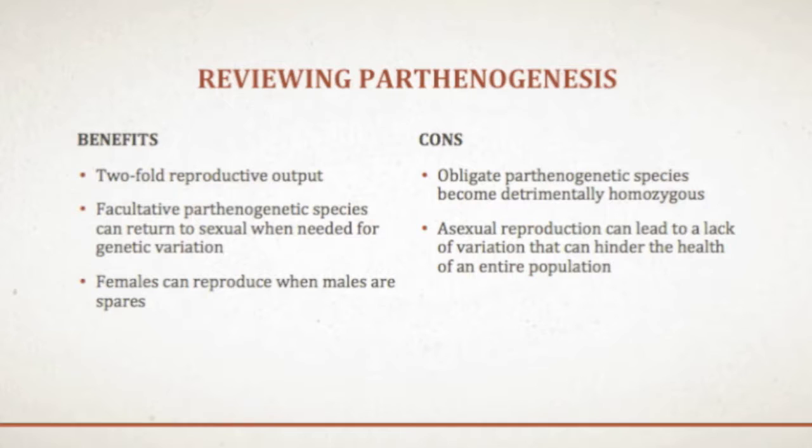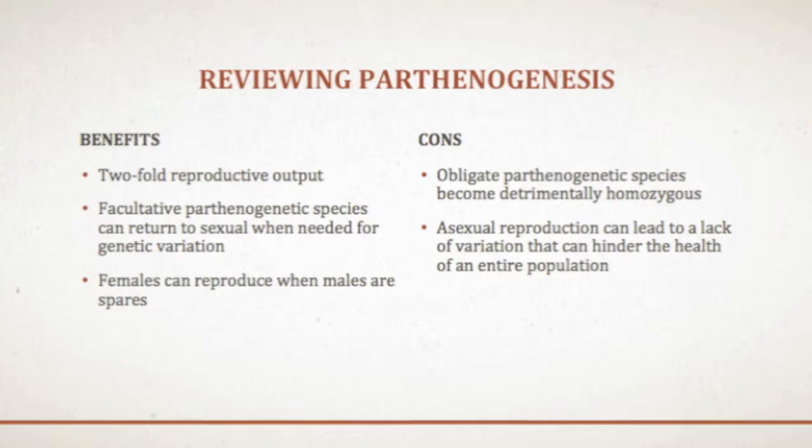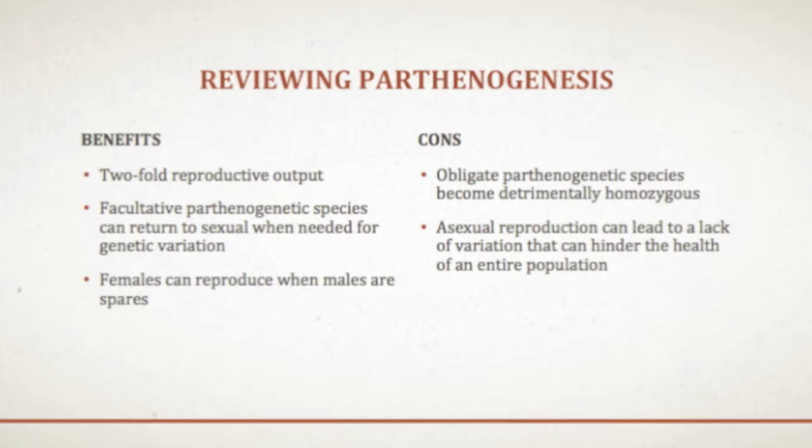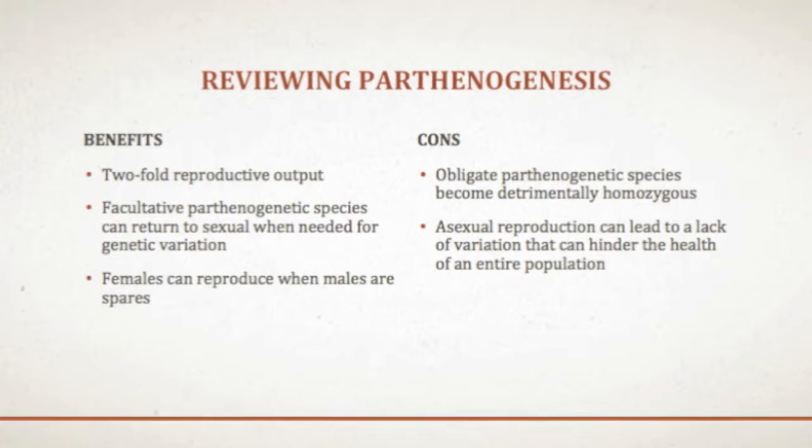In conclusion, reproduction by parthenogenesis has both benefits and costs. In facultative species, the process provides the short-term advantage of doubling reproductive output while providing the option of an immediate return to the long-term advantages of sexual reproduction and genetic variation. In other cases, it might benefit a species to convert to parthenogenetic reproduction, such as times when male partners are limited.